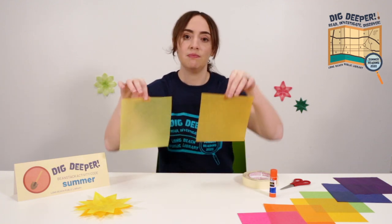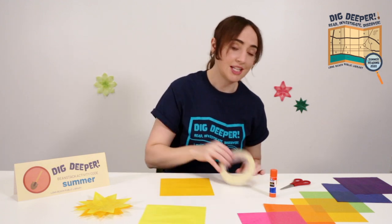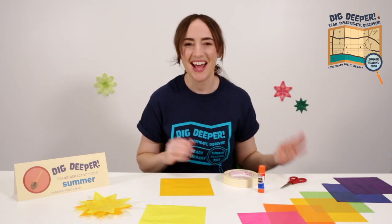And you'll need two. So you'll need two squares that are six inches by six inches. Then you will need some tape, a glue stick, and some scissors. Let's go ahead and start.